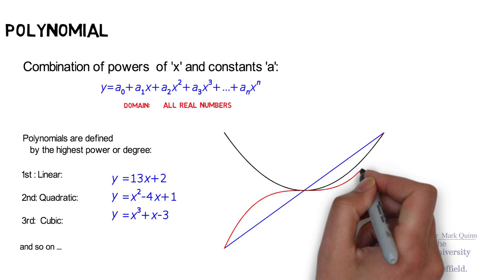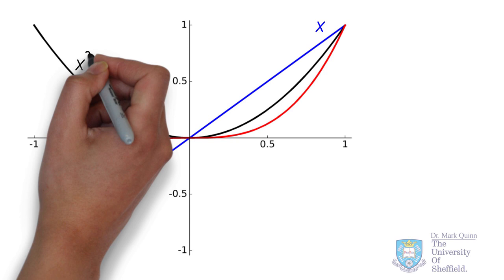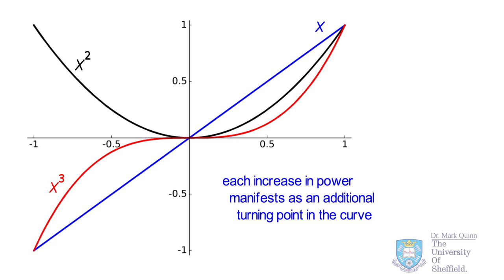Notice also that as we increase the power or degree in a polynomial, we get an extra turning point in the curve. Visually, we can see that the degree of the function determines its symmetry. This can be described in terms of odd or even symmetry. If all the terms have odd powers, we'd expect odd symmetry; if all terms have even powers, we'd expect even symmetry. A mixture of odd and even power values gives neither explicit odd nor even symmetry.